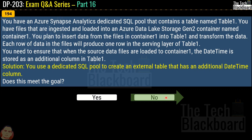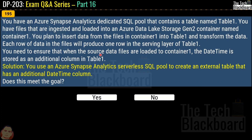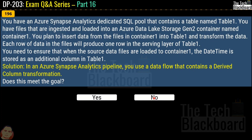Question number 195 uses the same scenario. This time the proposed solution is to use an Azure Synapse Analytics serverless SQL pool to create an external table with an additional datetime column. Does this meet the goal? Again, no. Question number 196 provides the correct solution: in an Azure Synapse Analytics pipeline, use a data flow that contains a derived column transformation. Does this meet the goal? Yes.